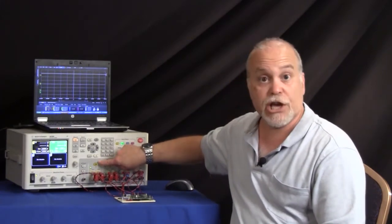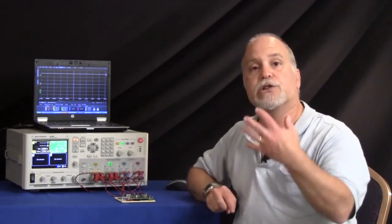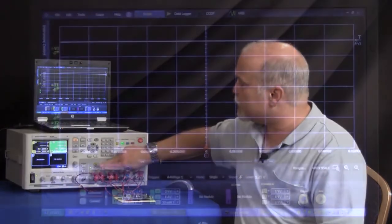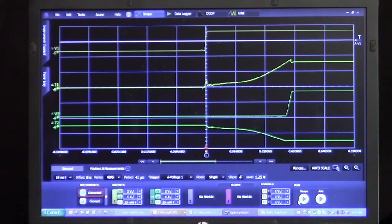When I push the on button on channel one, that will apply power to the device under test and that will also trigger the scope to make a measurement. So let me go ahead and turn that on and you can see here now there are some scope traces.